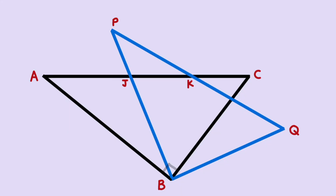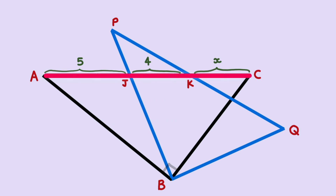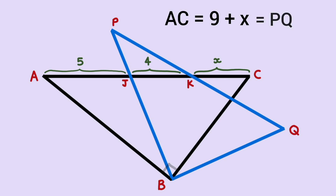Now let us see the solution. The question is to find the length of line segment KC, given AJ = 5cm and JK = 4cm. Let CK = X. The total length of AC becomes 5 + 4 + X, which equals 9 + X. Hence PQ will also have the same length, 9 + X, because triangle ABC is congruent to triangle PBQ.